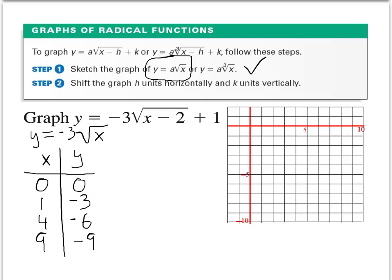So I'm going to graph these points: one point at (0, 0), one point at (1, −3), another at (4, −6), and the last point at (9, −9). That gives us the graph of y equals negative 3 times the square root of x.